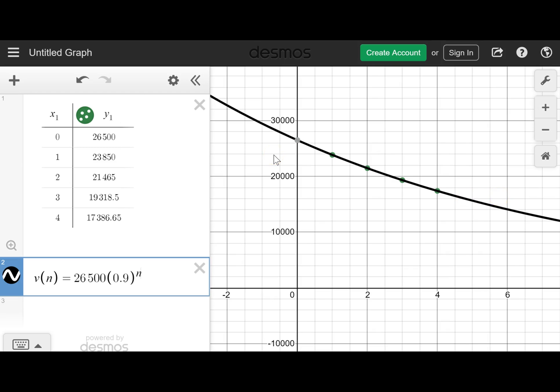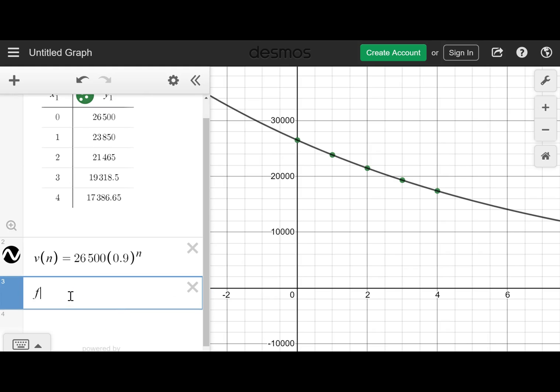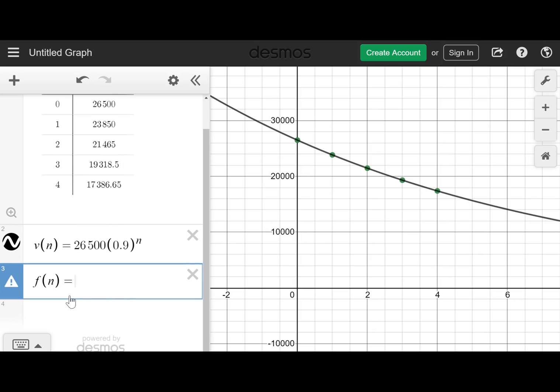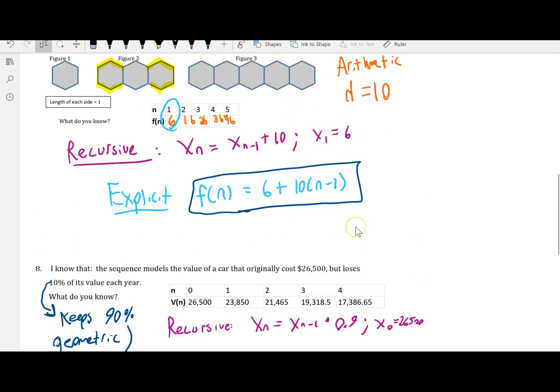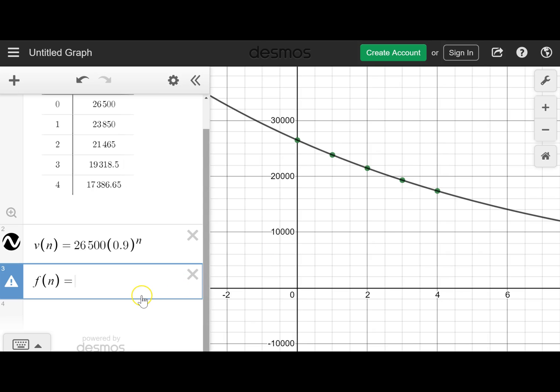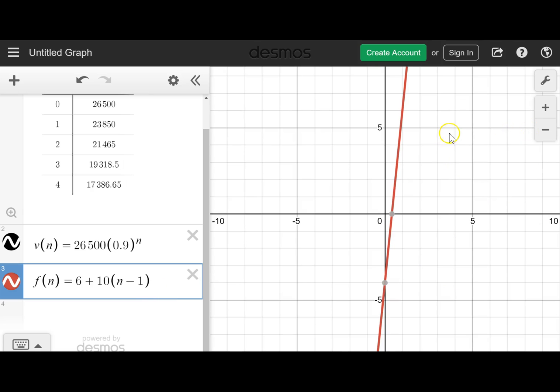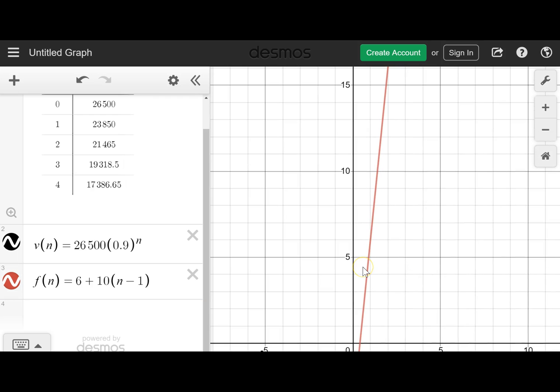You can see there is curvature to the graph that fits those points. I want to compare that to the previous sequence that we looked at. That was f(n) = 6 + 10(n-1) for the perimeter. I'm going to hit the house button here so we can see that in its proper context. You can see that's a straight line for the arithmetic sequence compared to the curved line for the geometric sequence. That's an interesting idea to hold on to as we transition into the next unit.